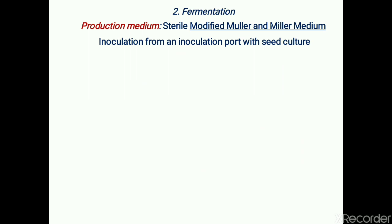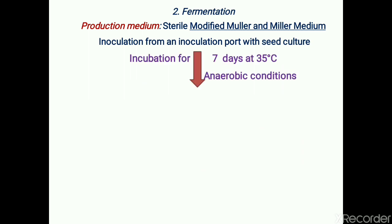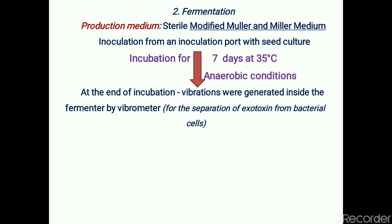The second step is fermentation. The production medium used during fermentation is modified Muller and Miller medium. It is inoculated from an inoculation port with seed culture into a fermenter. Incubation continues for seven days at 35°C under anaerobic conditions.